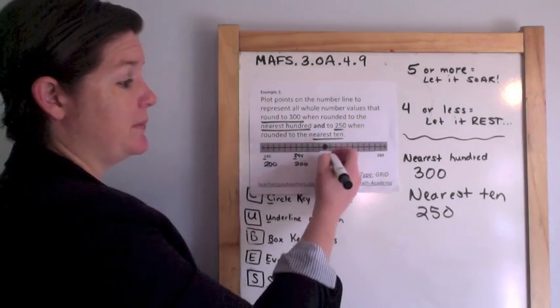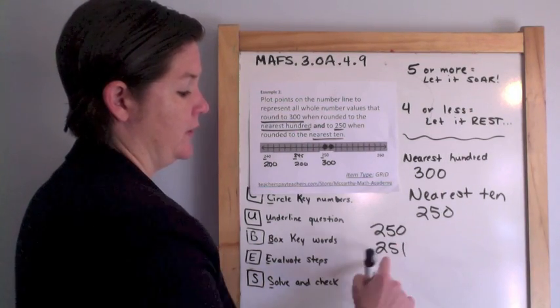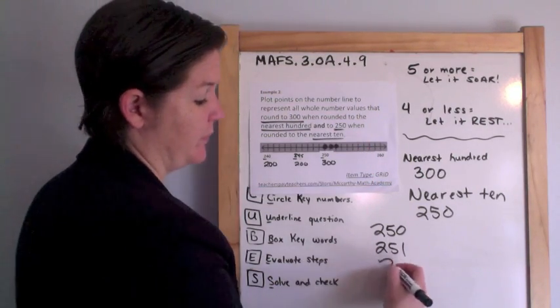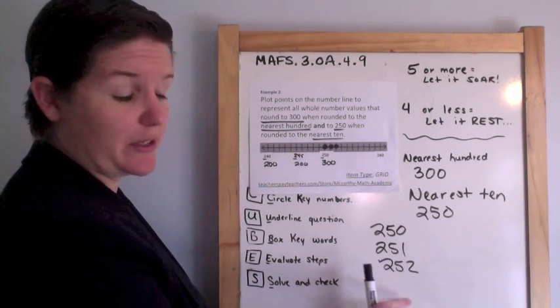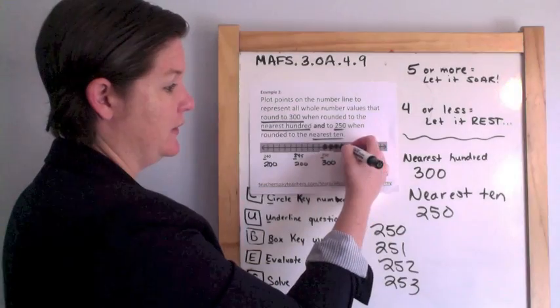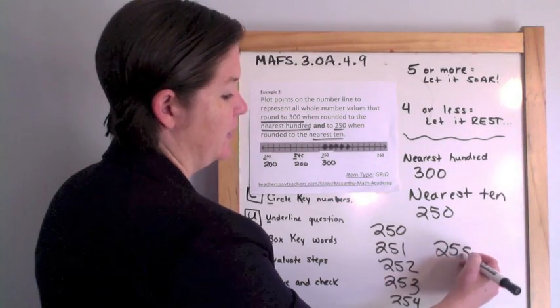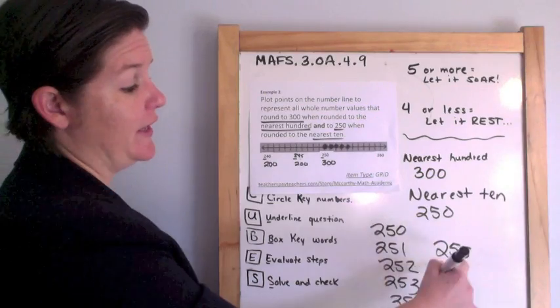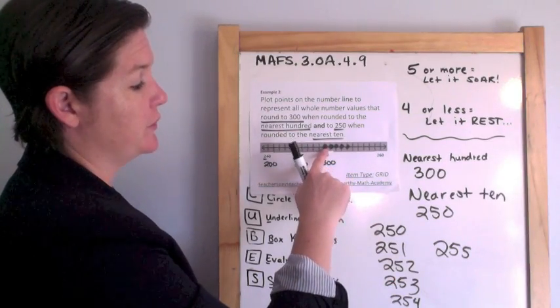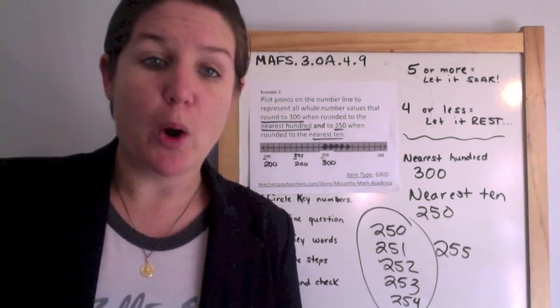That's the same thing for two hundred fifty-one. If you round it to the nearest hundred, it would be three hundred. Nearest ten would be two hundred fifty. Two hundred fifty-two would be the same. Two hundred fifty-three, same thing. Two hundred fifty-four, same thing, but watch what happens when I get to 255. If I round 255 to the nearest 100 that would be 300 but it would be 260 for the nearest 10. So my answers are 250, 251, 252, 253, 254 right there. I've got to make sure I plug in those points.